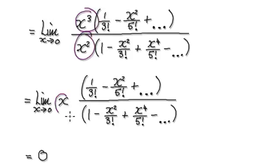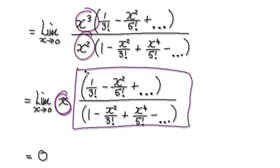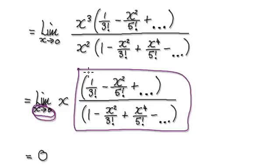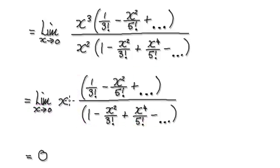So this divided by this will then give you your x. It's really x multiplied by the whole thing. But by glancing at this, you can see that as x heads towards 0, this whole thing here will head towards something — and then you're going to times by something that's heading towards 0.